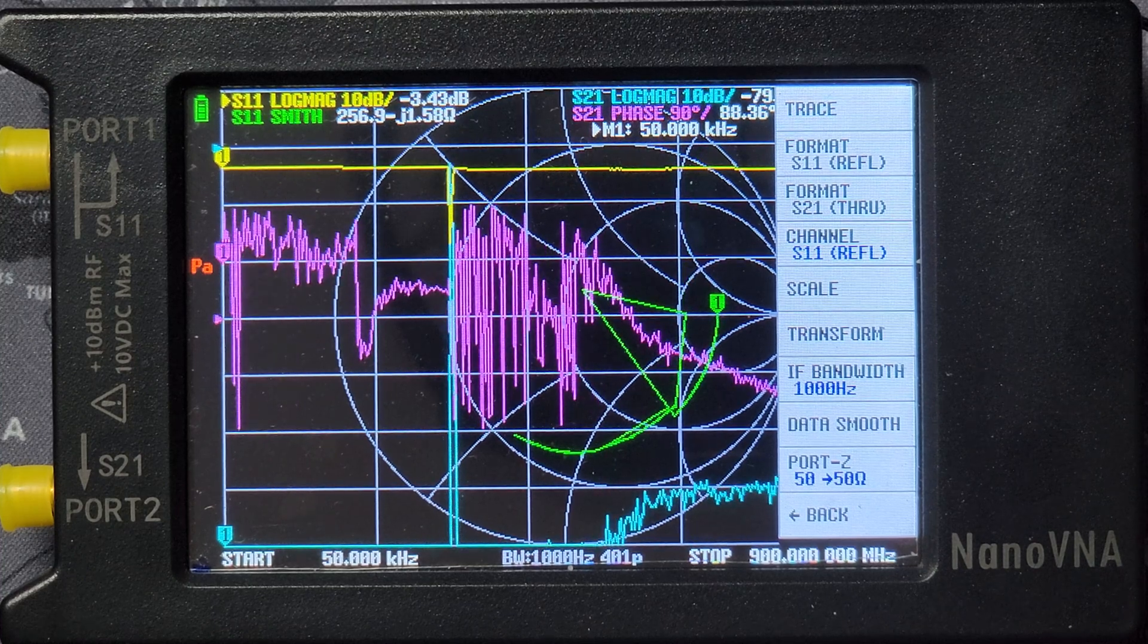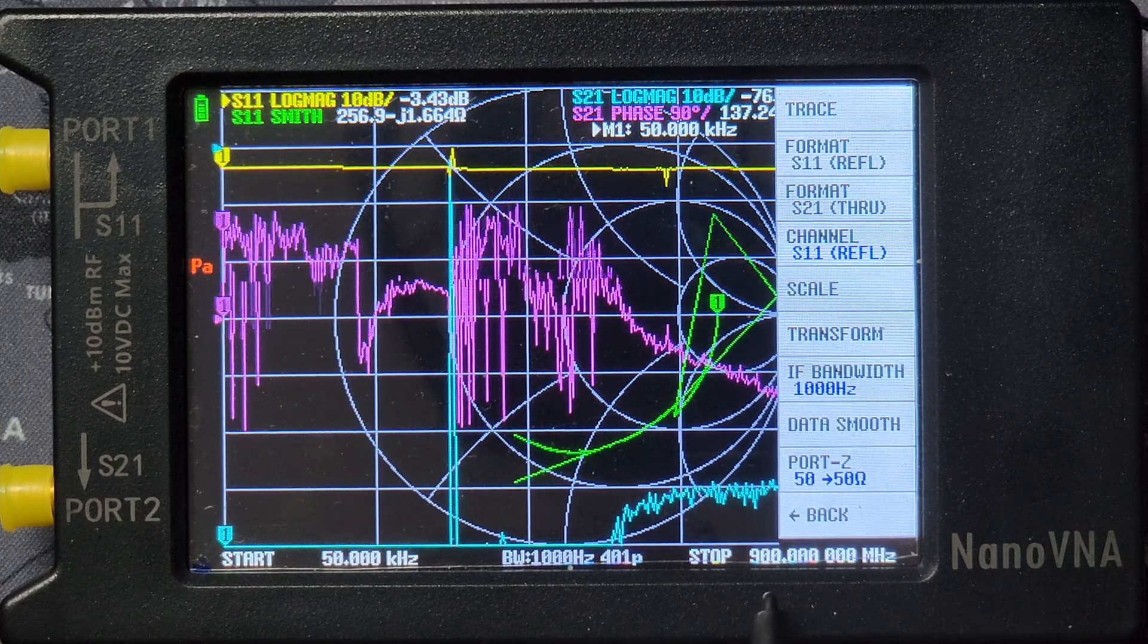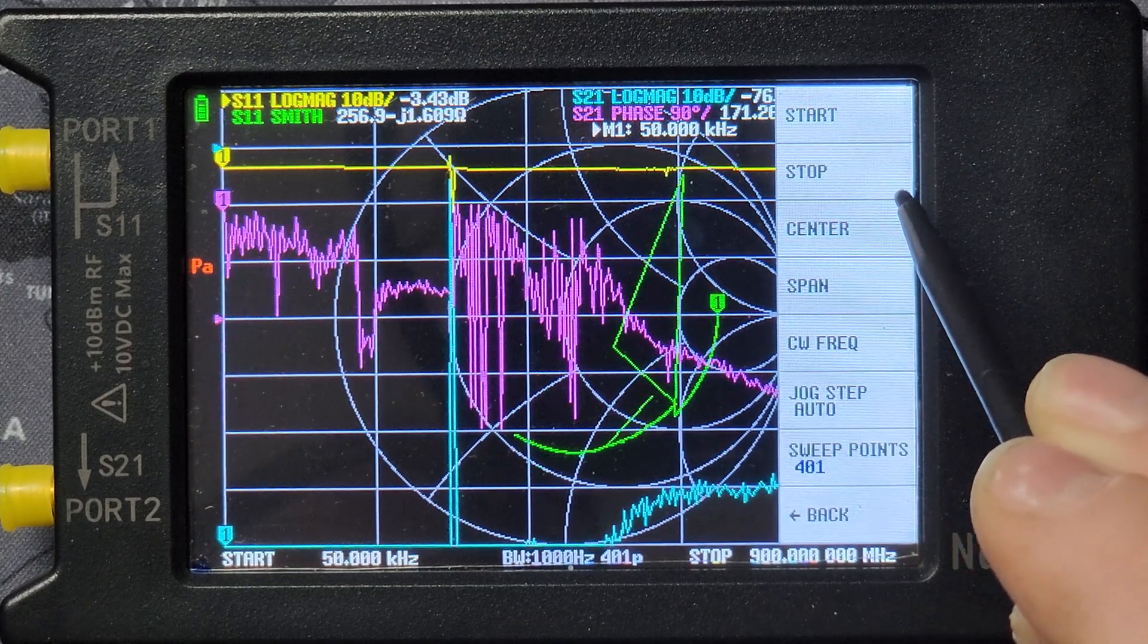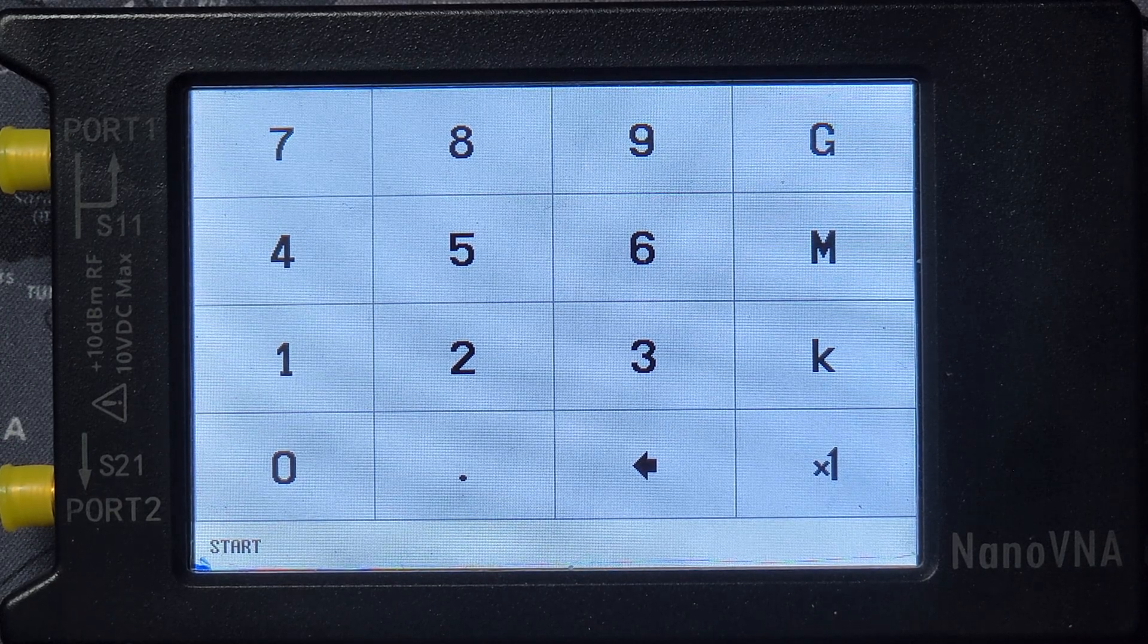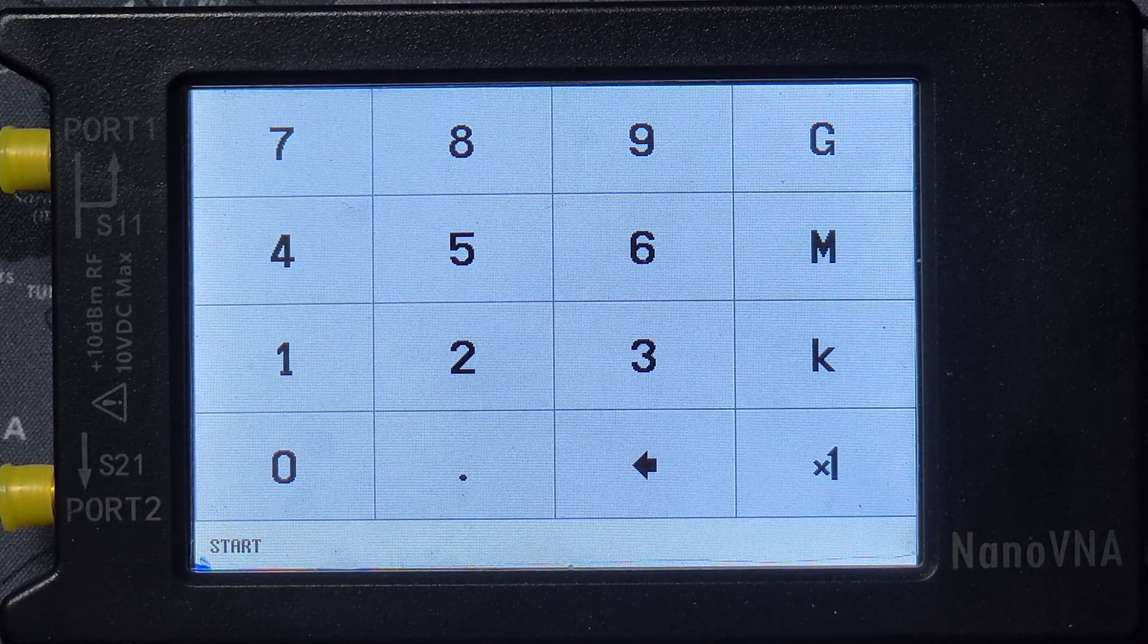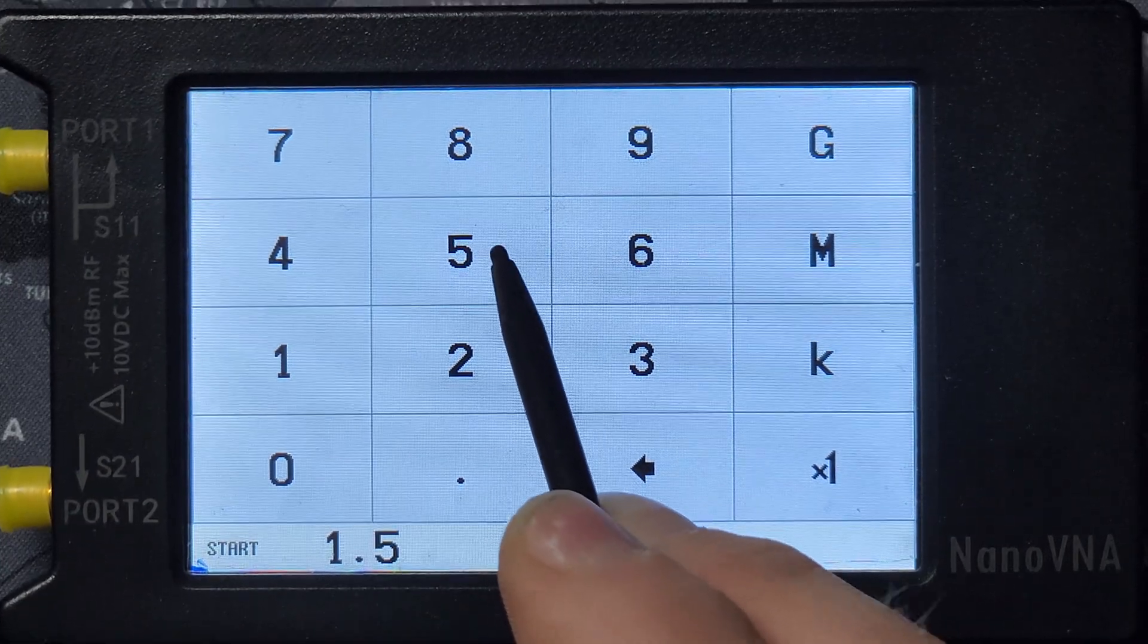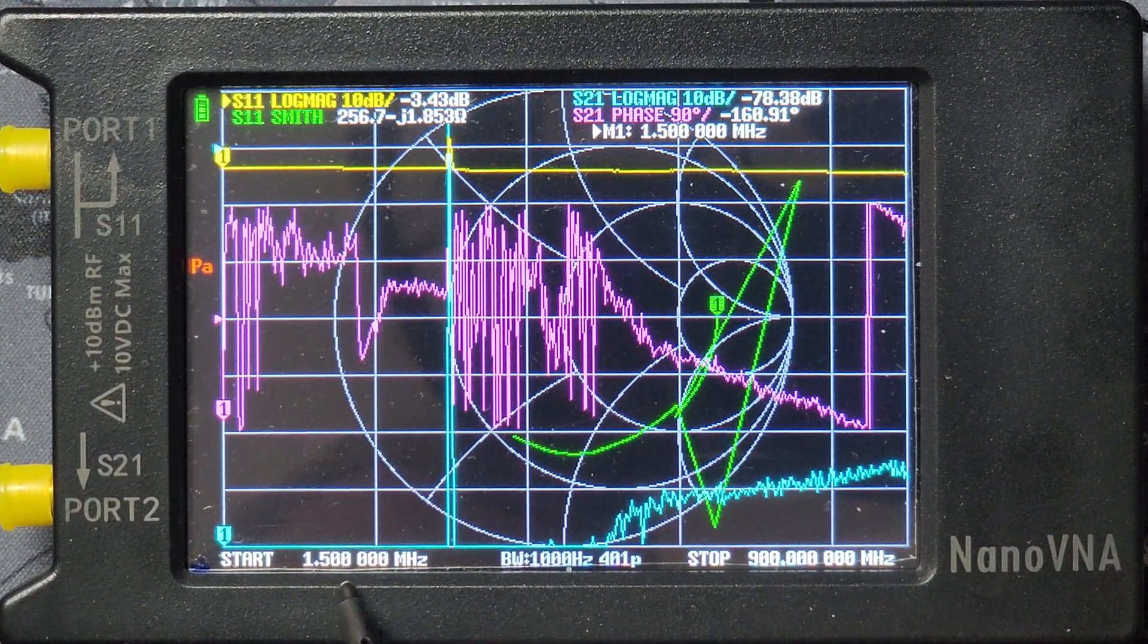So the next step you want to do is actually change your start and stop frequencies. Currently it's set to 50 kHz all the way up to a huge 900 MHz, which is way more spectrum than we actually need. So you want to hit back, click on stimulus and we want to select a start frequency. Now for me, I want to do 160 meters down to 6 meters and that might be a huge range for you. You might only care about 80 meters or 40 meters or just a small portion of the ham band. But for me, I want to do 160 to 6. So I'm going to change that to 1.5 MHz.